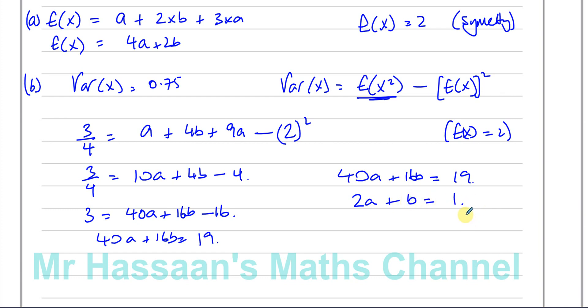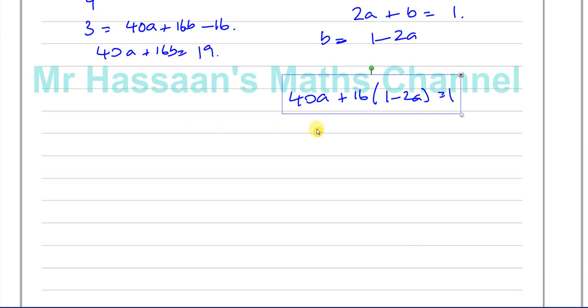So I have one equation, 40a plus 16b equals 19, and then I have the other equation, which is 2a plus b equals 1. So what I can do here is I can use substitution, that's probably the easiest thing to do. So b equals 1 minus 2a. So I can replace the b here with 1 minus 2a. So I have 40a plus 16 times 1 minus 2a equals 19. So now I can find what a is.